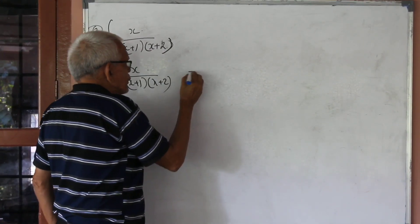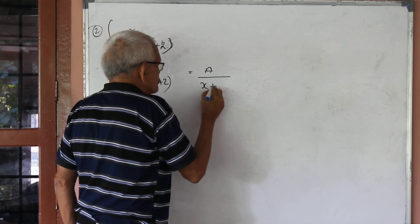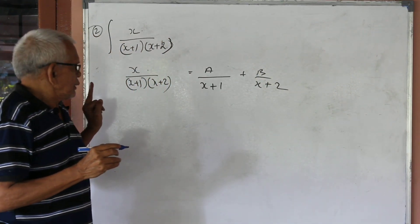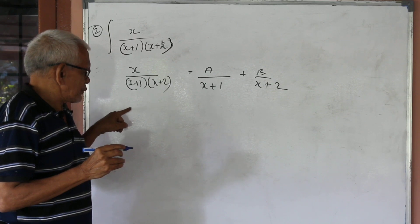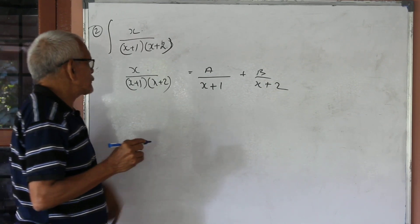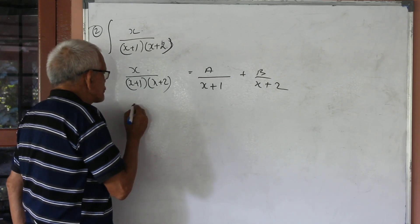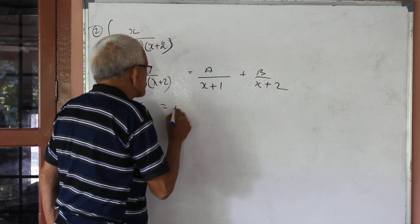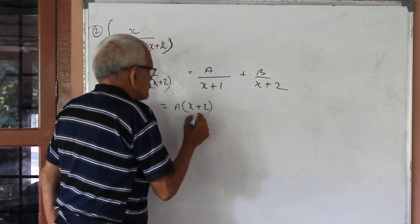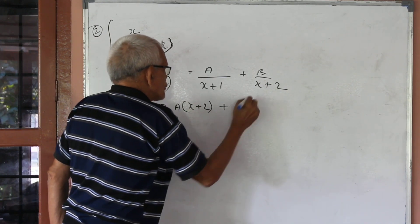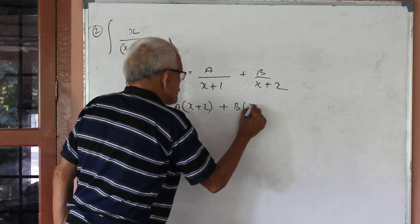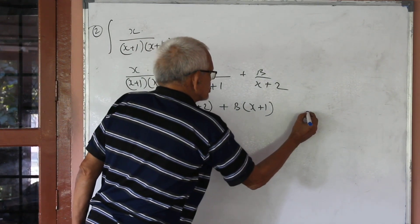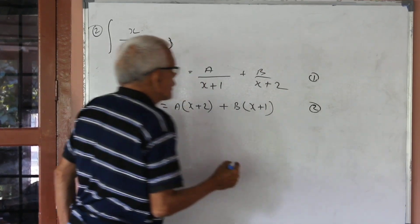Next, x by (x+1) squared in the power 2. Set up partial fractions: A by (x+1) plus B by (x+2). Multiply by the denominator — then (x+1)(x+2) get cancelled. Therefore x equals A into (x+2) plus B into (x+1).